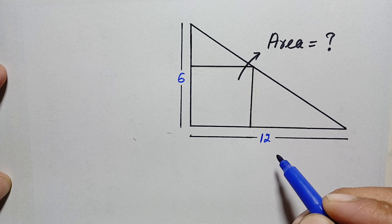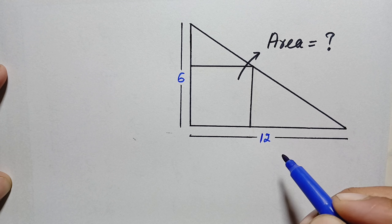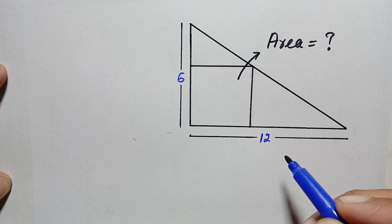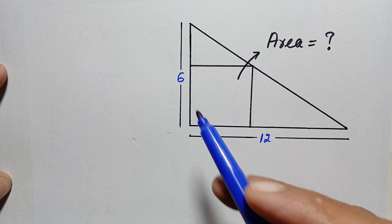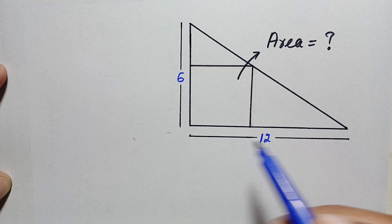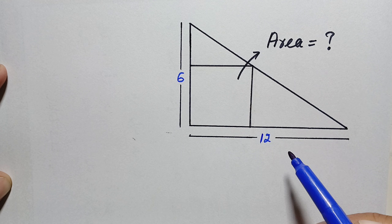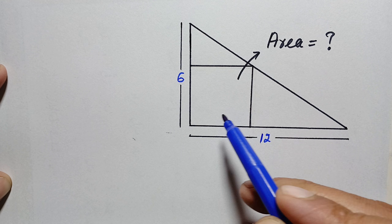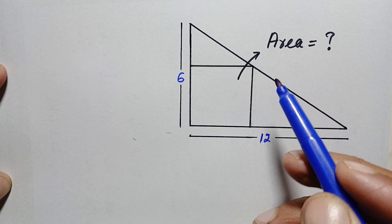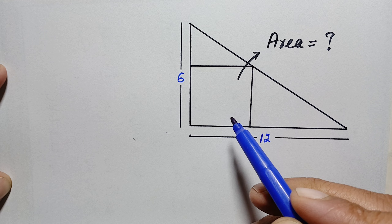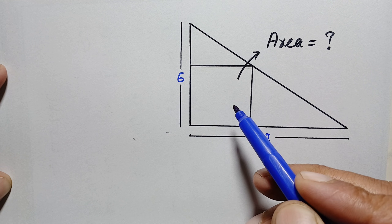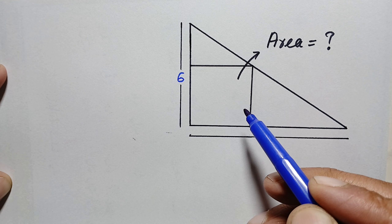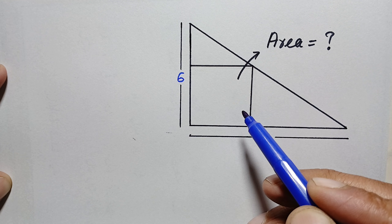Hello everyone, welcome. Today we have a new geometry math problem. We are given a right angle triangle whose two sides are given, and there is a square inside the triangle. Our target is to find out the area of this square.